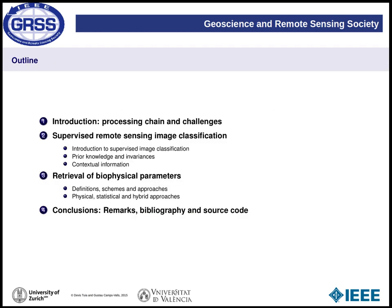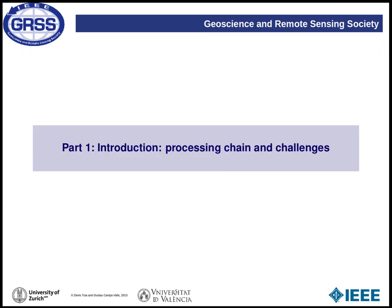Today's presentation is organized in four parts. First, we will have an introduction, where I will detail the processing chain for remote sensing and the challenges that images and processing raise. Then there will be two big thematic parts: one on supervised remote sensing image classification, and the second on the retrieval of biophysical parameters. We will then conclude with some remarks, pointers to the bibliography, and links to relevant source code.